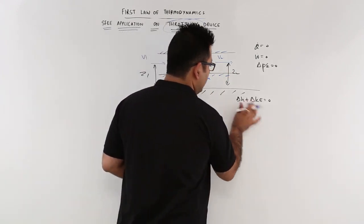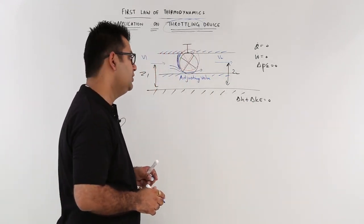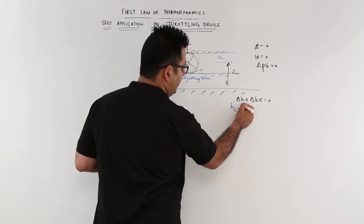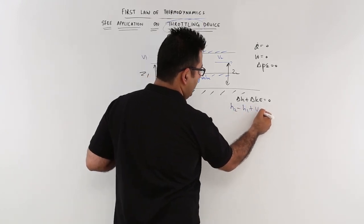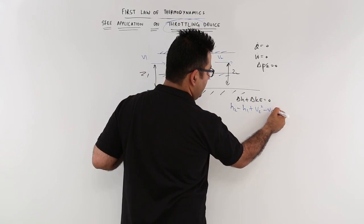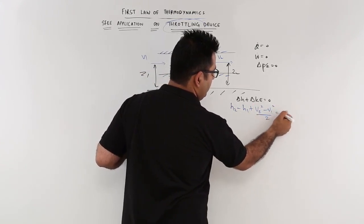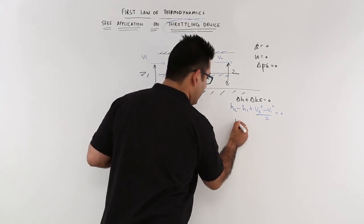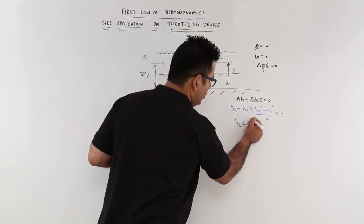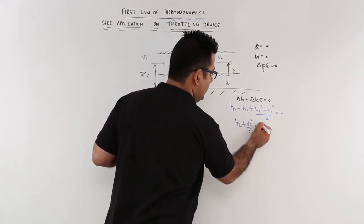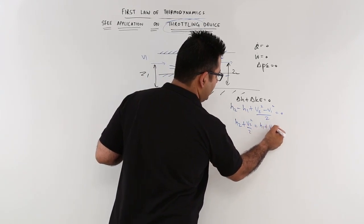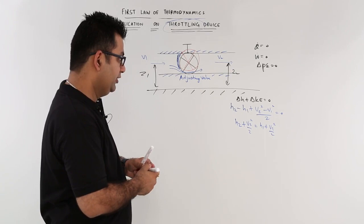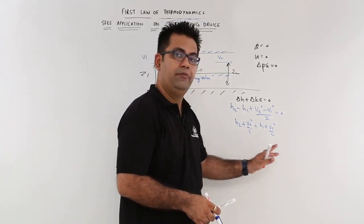So this is the equation that is left for your analysis. Now this would give you H2 minus H1 plus V2 square minus V1 square upon 2 is equal to 0. So you can take them on either side. So you will have H2 plus V2 square by 2 is equal to H1 plus V1 square by 2. This is the equation that is left for you to understand.